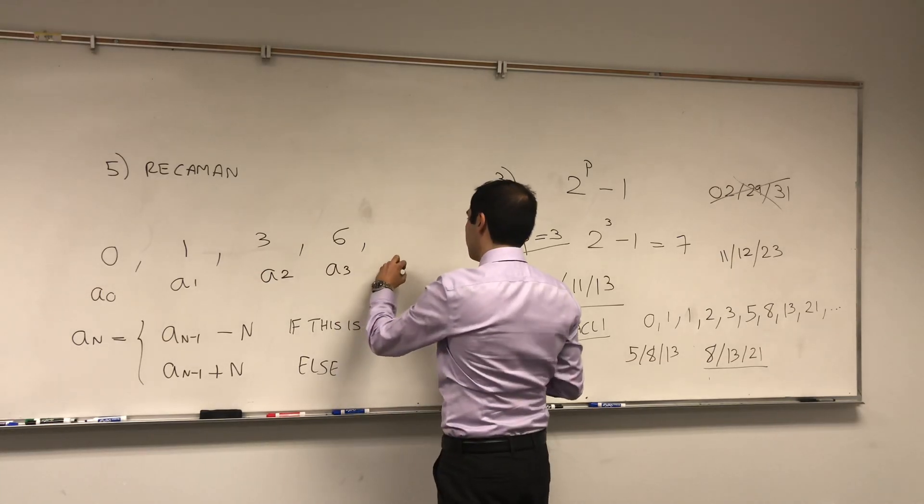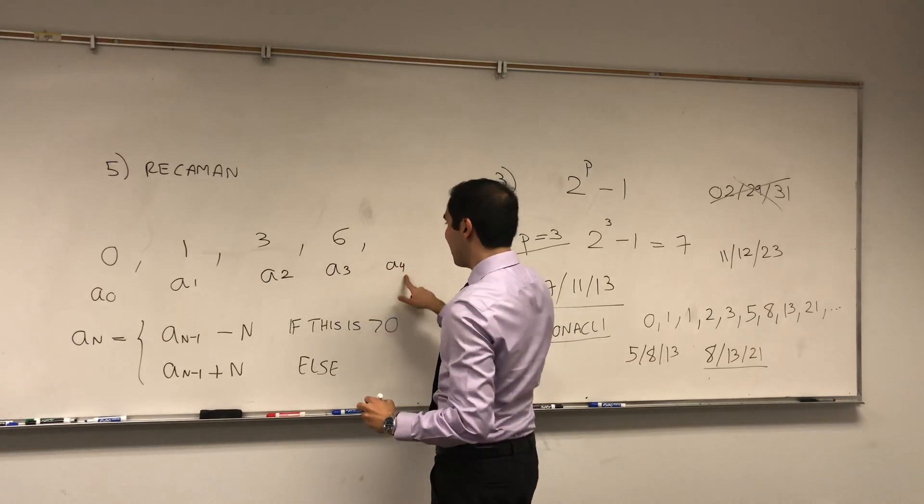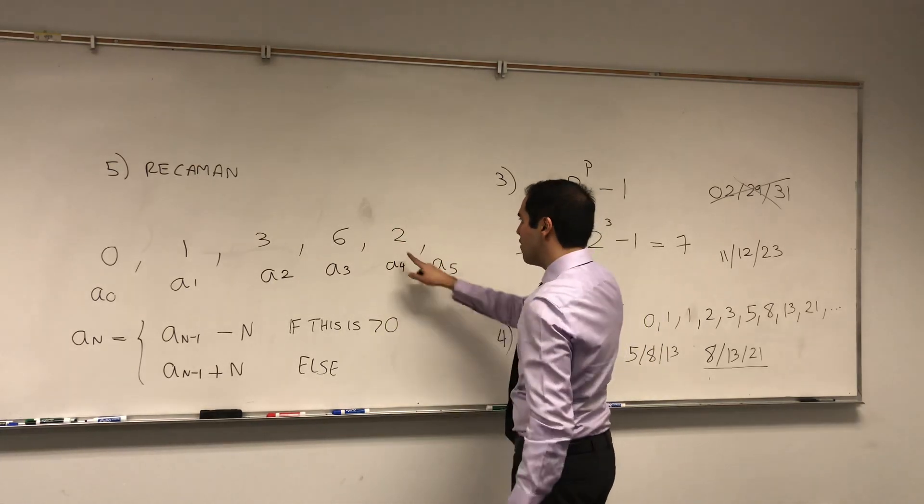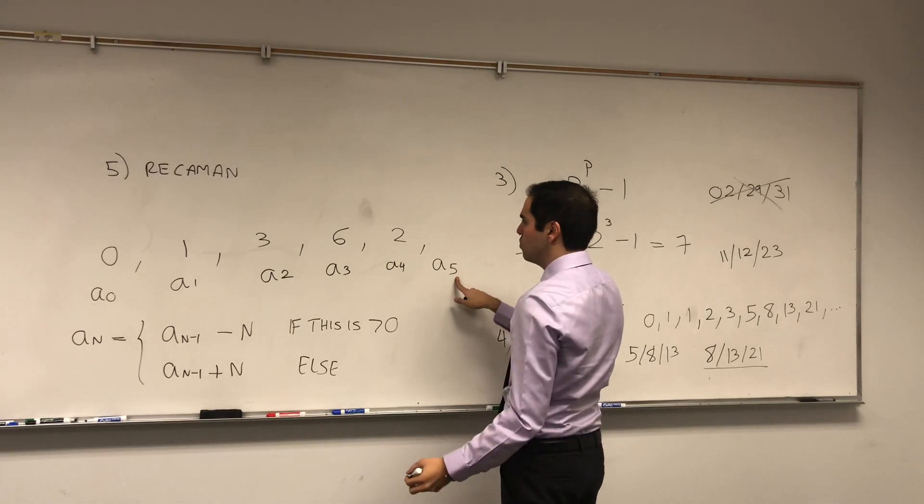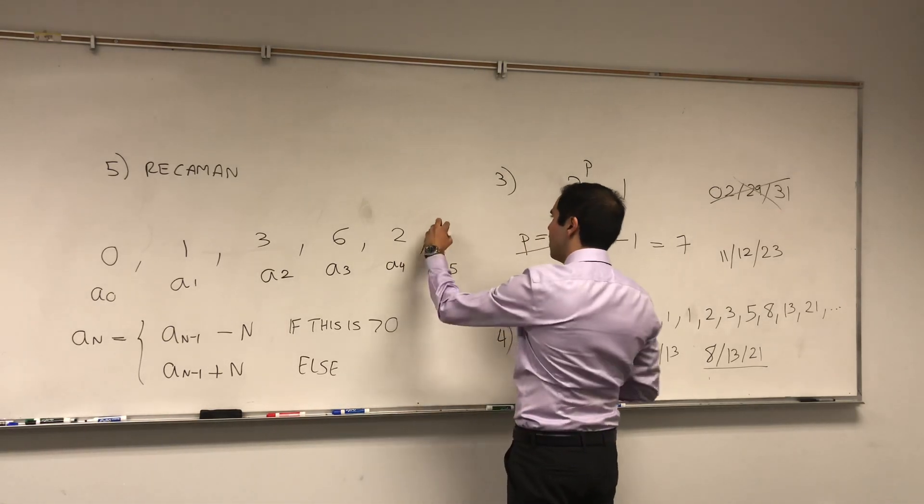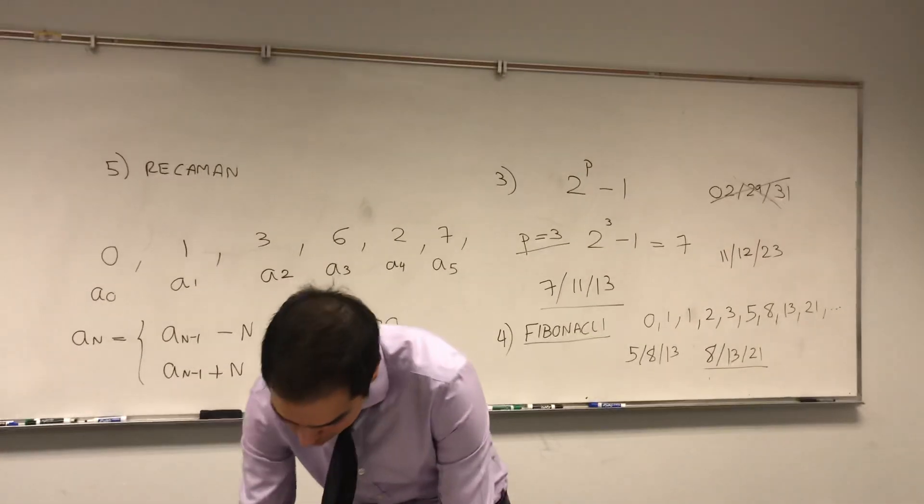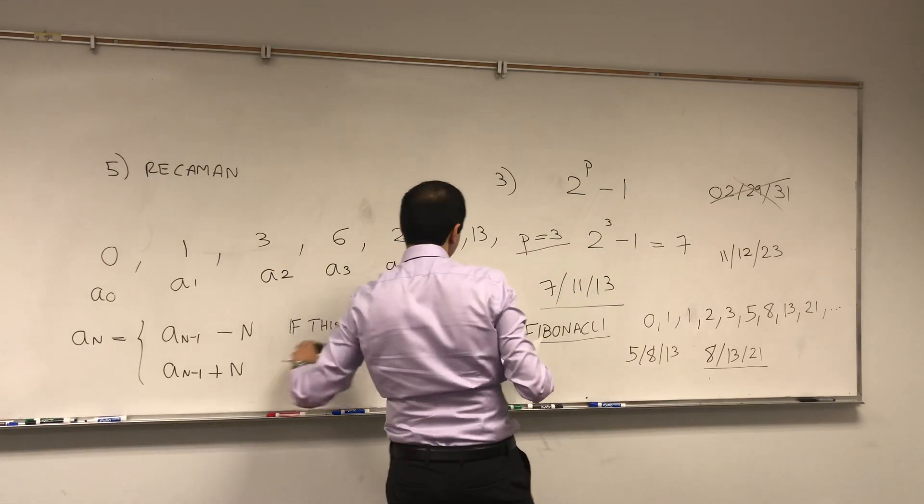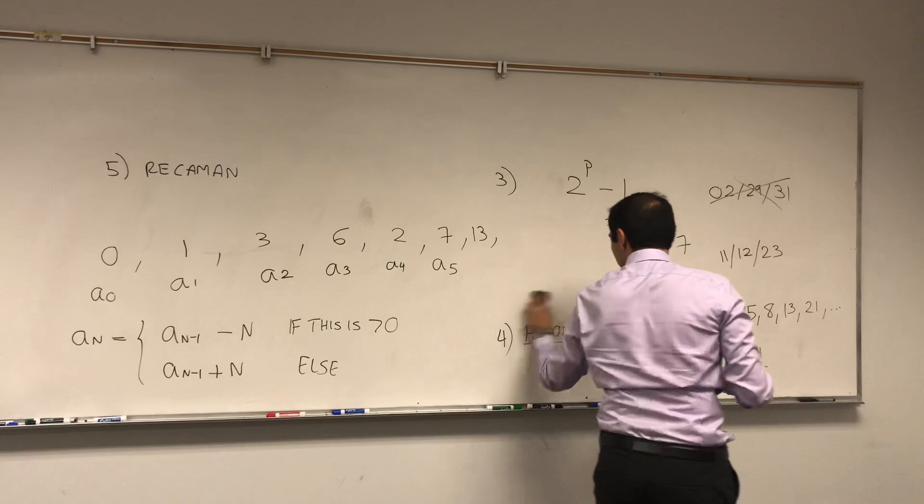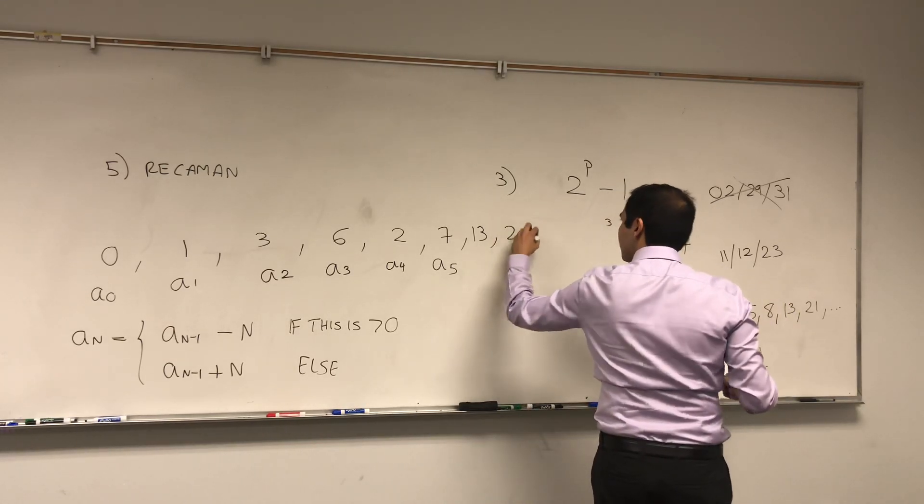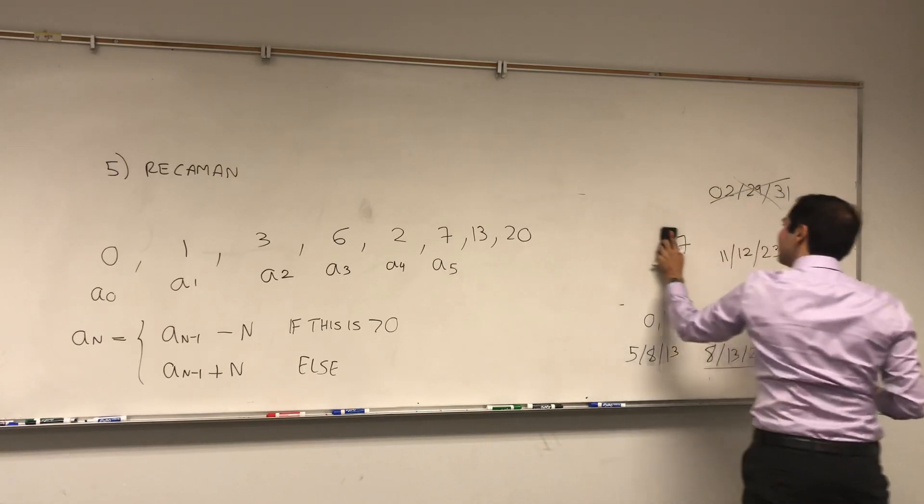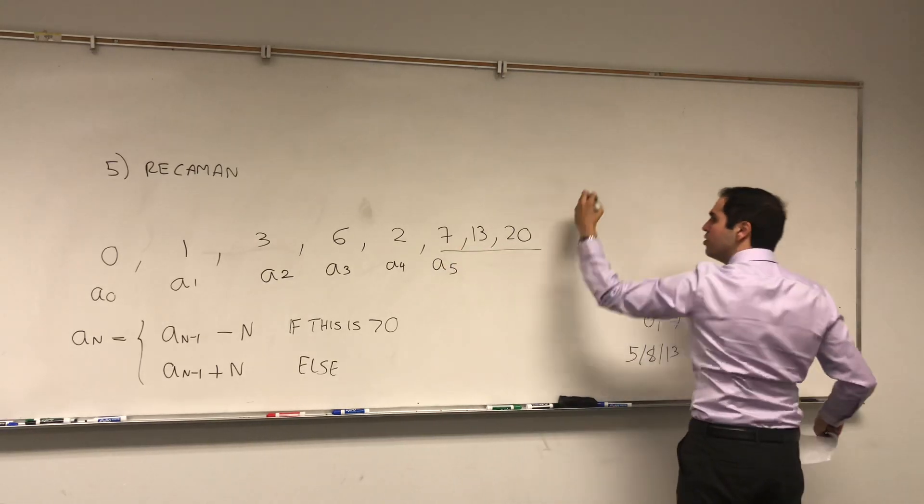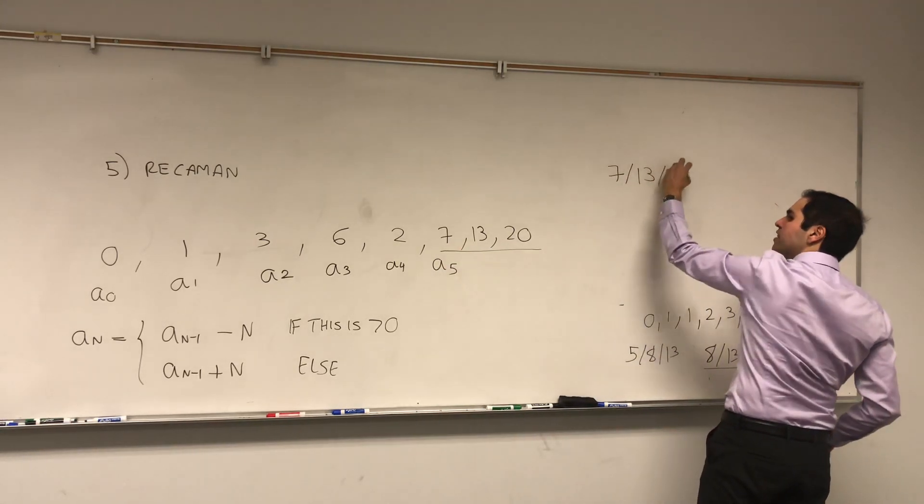And then you do a four. Six minus four, which is positive. So we accept it. A five, two minus five is minus three, which we reject. So two plus five, which is seven, and so on and so forth. And I think you have 13, and then 20, and so on. In fact, the reason I stopped at 20 is because we have a recommends date coming soon, which is July 13th, 2020.